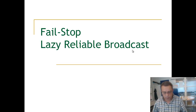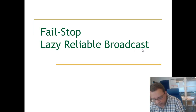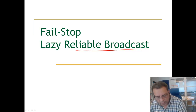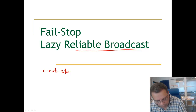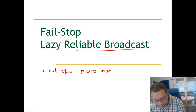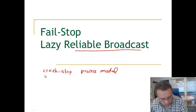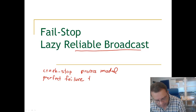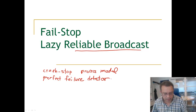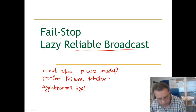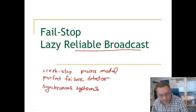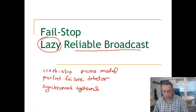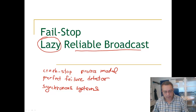Let us now look at the implementation of reliable broadcast abstraction in the fail-stop model. The fail-stop model is a crash-stop process model, and it also uses a perfect failure detector, so we are really talking about synchronous systems. We are going to show an algorithm called lazy reliable broadcast, which implements the reliable broadcast abstraction. The name 'lazy' comes from the fact that it will not send extra messages unless it detects that a process has crashed.